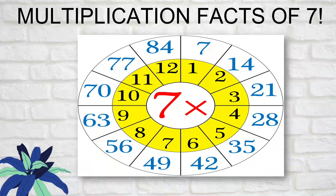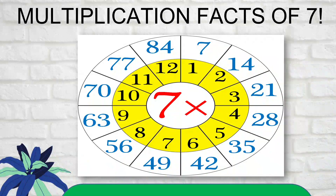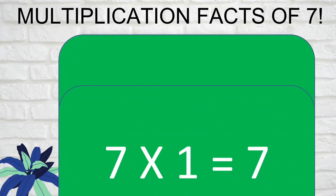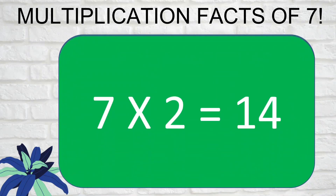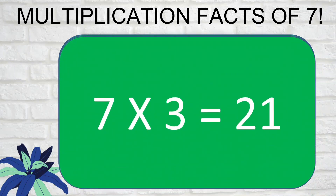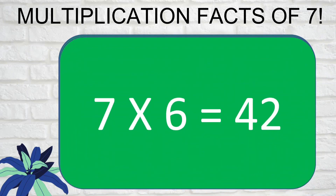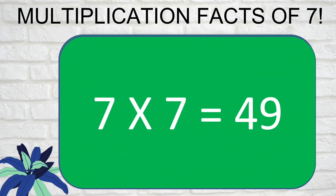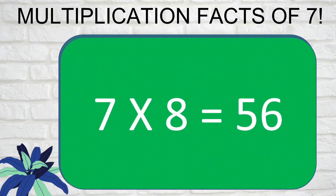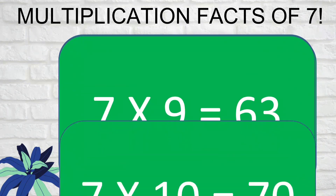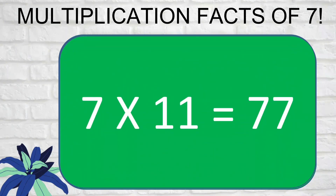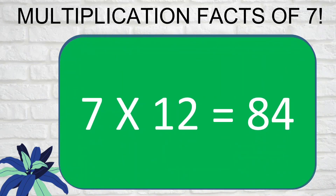Now let's move on to the multiplication facts of seven. Please recite with me: 7×0=0, 7×1=7, 7×2=14, 7×3=21, 7×4=28, 7×5=35, 7×6=42, 7×7=49, 7×8=56, 7×9=63, 7×10=70, 7×11=77, 7×12=84. Very good, and thank you for cooperating!